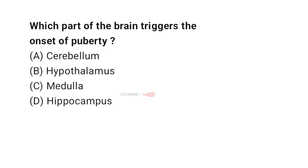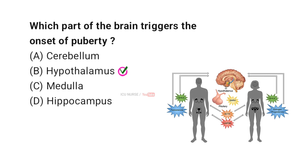Which part of the brain triggers the onset of puberty? A: Cerebellum, B: Hypothalamus, C: Medulla, D: Hippocampus. The correct answer is B: Hypothalamus. The hypothalamus, a part of the brain, triggers the onset of puberty. It releases a hormone called gonadotrophin-releasing hormone, which signals the pituitary gland to produce follicle-stimulating hormone and luteinizing hormone. These hormones then stimulate the ovaries in girls and the testes in boys, starting puberty.